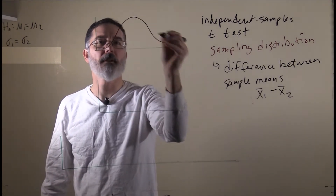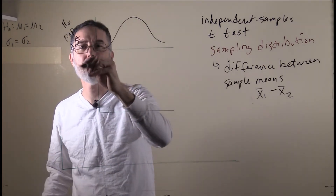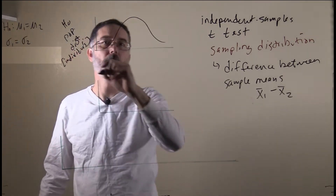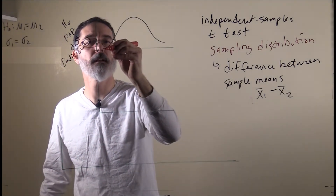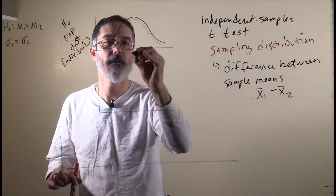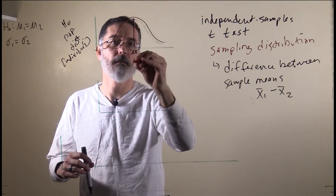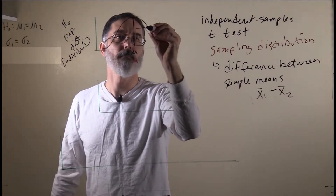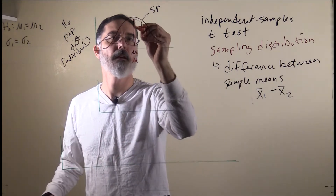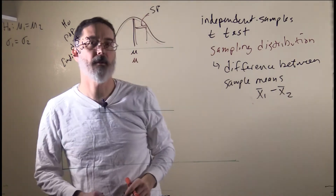When we draw the population distribution assumed under the null hypothesis, there are two completely, perfectly overlapping distributions, and their means are in the exact same place. The standard deviation here is the pooled standard deviation, and they are the same standard deviations for both of those population distributions.